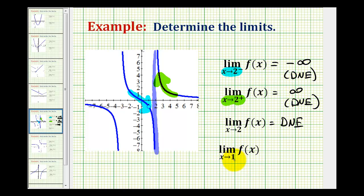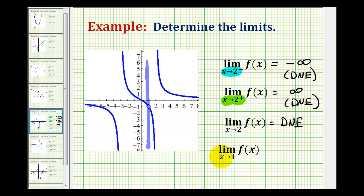For the limit as x approaches one of f of x, let's clear our work and draw a vertical line at x equals positive one. Notice it passes right through a hole in the graph, but a hole is not going to affect whether the limit exists, because we're not concerned about what the function value equals when x is one — we're concerned about what it's approaching from both the left and right sides. Even though there's a hole at x equals one, we're approaching a y value of negative one. So the limit as x approaches one of f of x is equal to negative one.